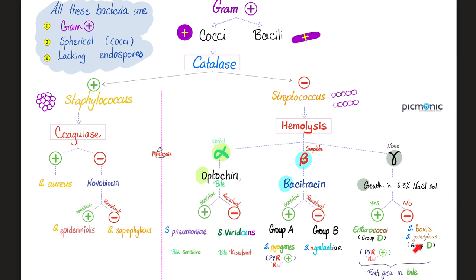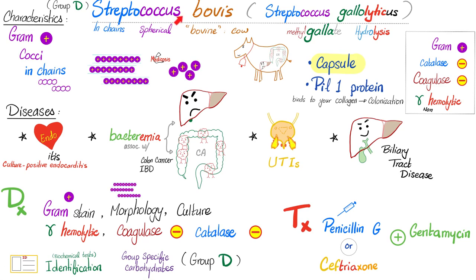Let's talk about Streptococcus bovis, also known as Streptococcus gallolyticus — group D, gram-positive cocci in chains. They can lead to diseases in cows and also in humans, especially culture-positive endocarditis, bacteremia associated with liver disease, colon disease, colon cancer, inflammatory bowel disease. Moreover, Streptococcus bovis can lead to urinary tract infections and biliary tract disease.